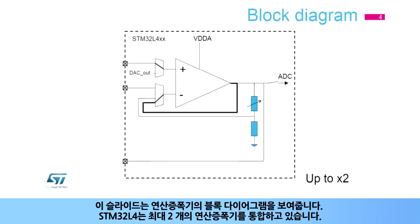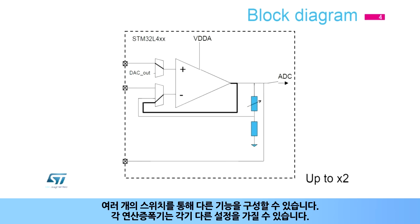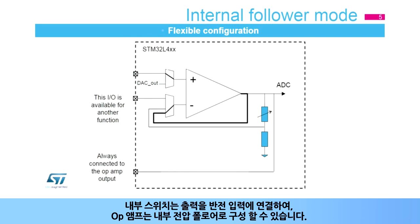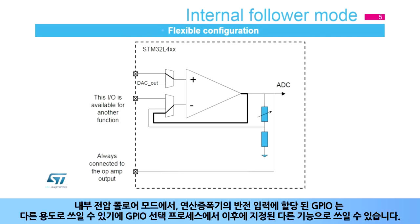This slide shows the block diagram of the operational amplifiers. The STM32L4 integrates two operational amplifiers. Several switches are used to configure different functions, and each op-amp can be configured differently. The operational amplifier can be configured as an internal voltage follower, where the internal switch connects the output to the inverting input. In internal voltage follower mode, the GPIO pad assigned to the op-amp's inverting input is free, so that it may be used with a different function as subsequently assigned in the GPIO selection process.